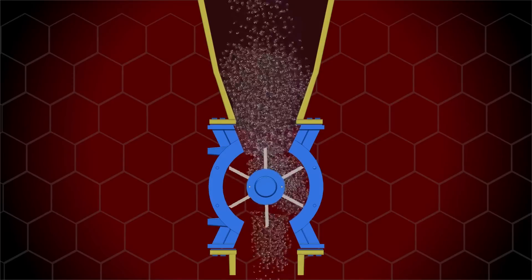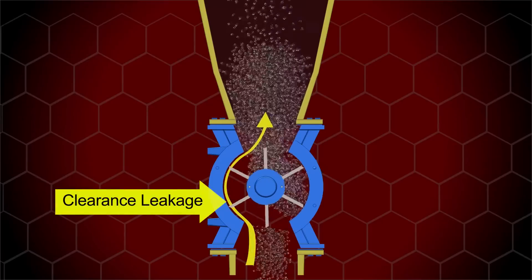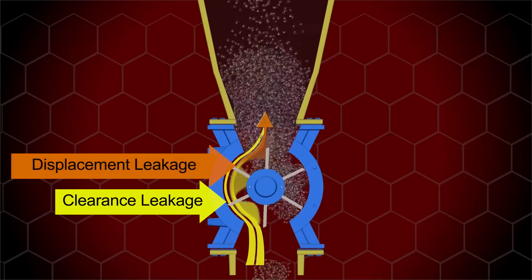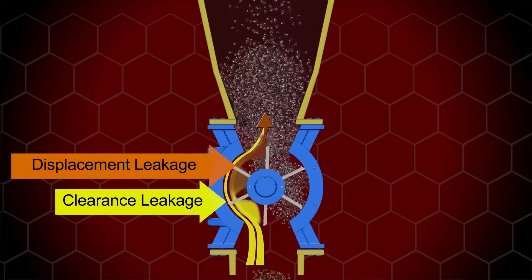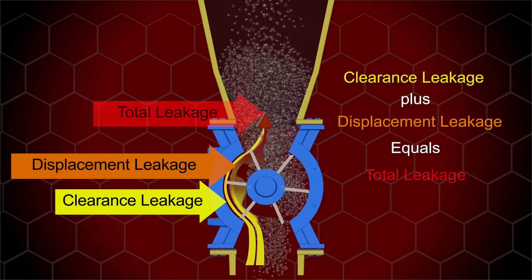There are two types of valve leakage. The first is clearance leakage, which occurs around the perimeter of the valve. The second is displacement leakage, which is the air that is trapped in the empty rotor pockets. Clearance leakage plus displacement leakage equals total leakage.